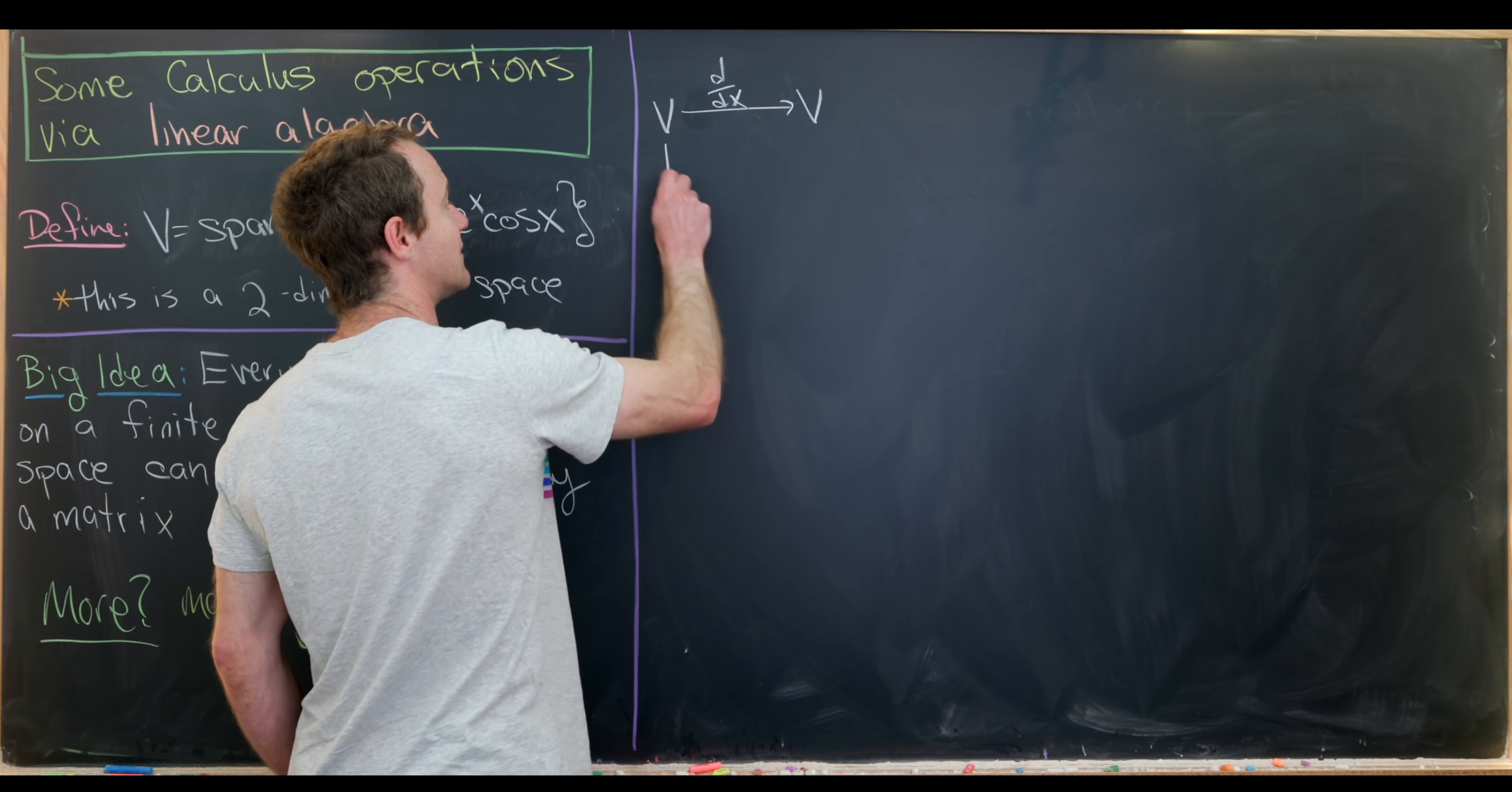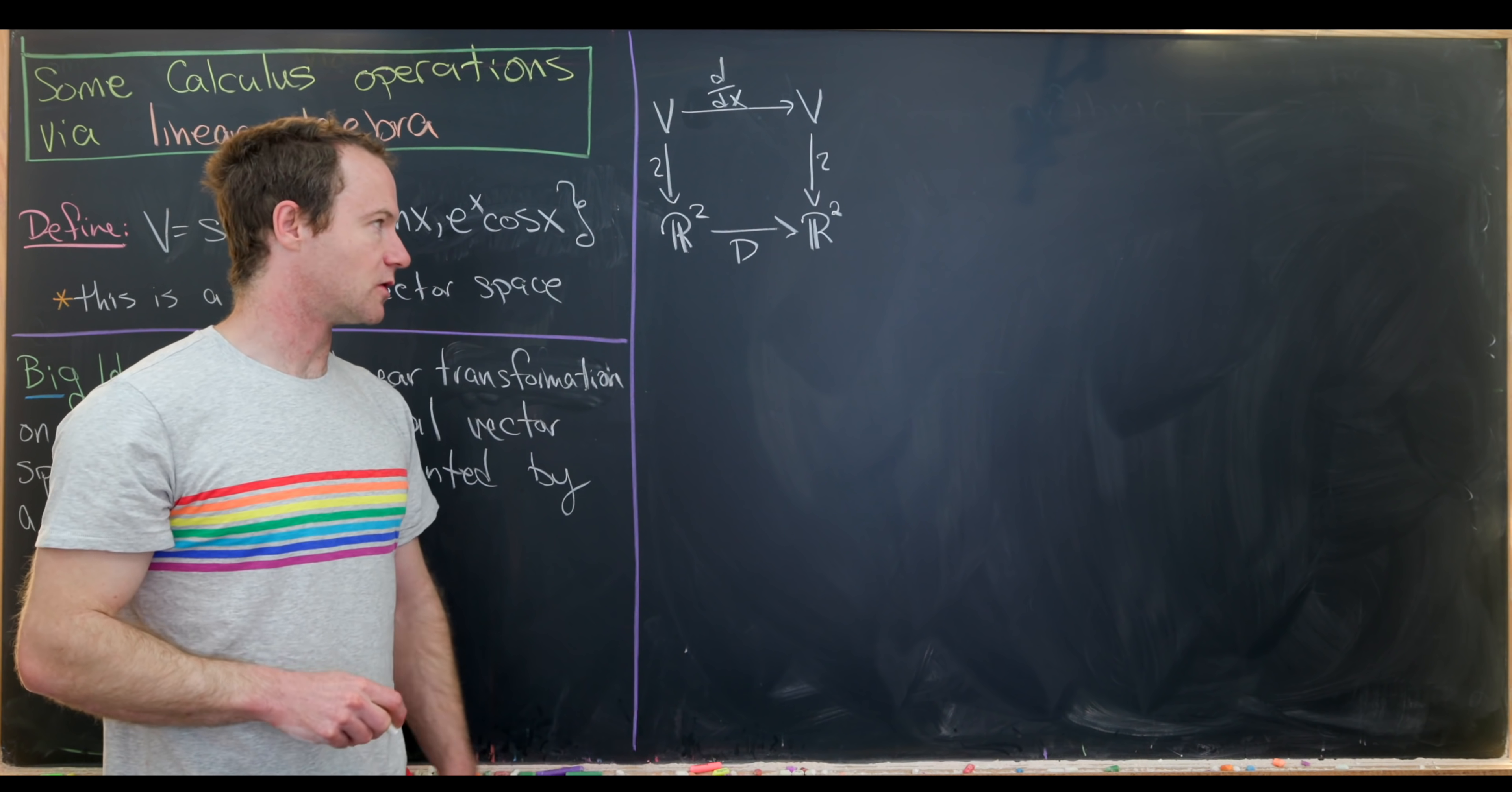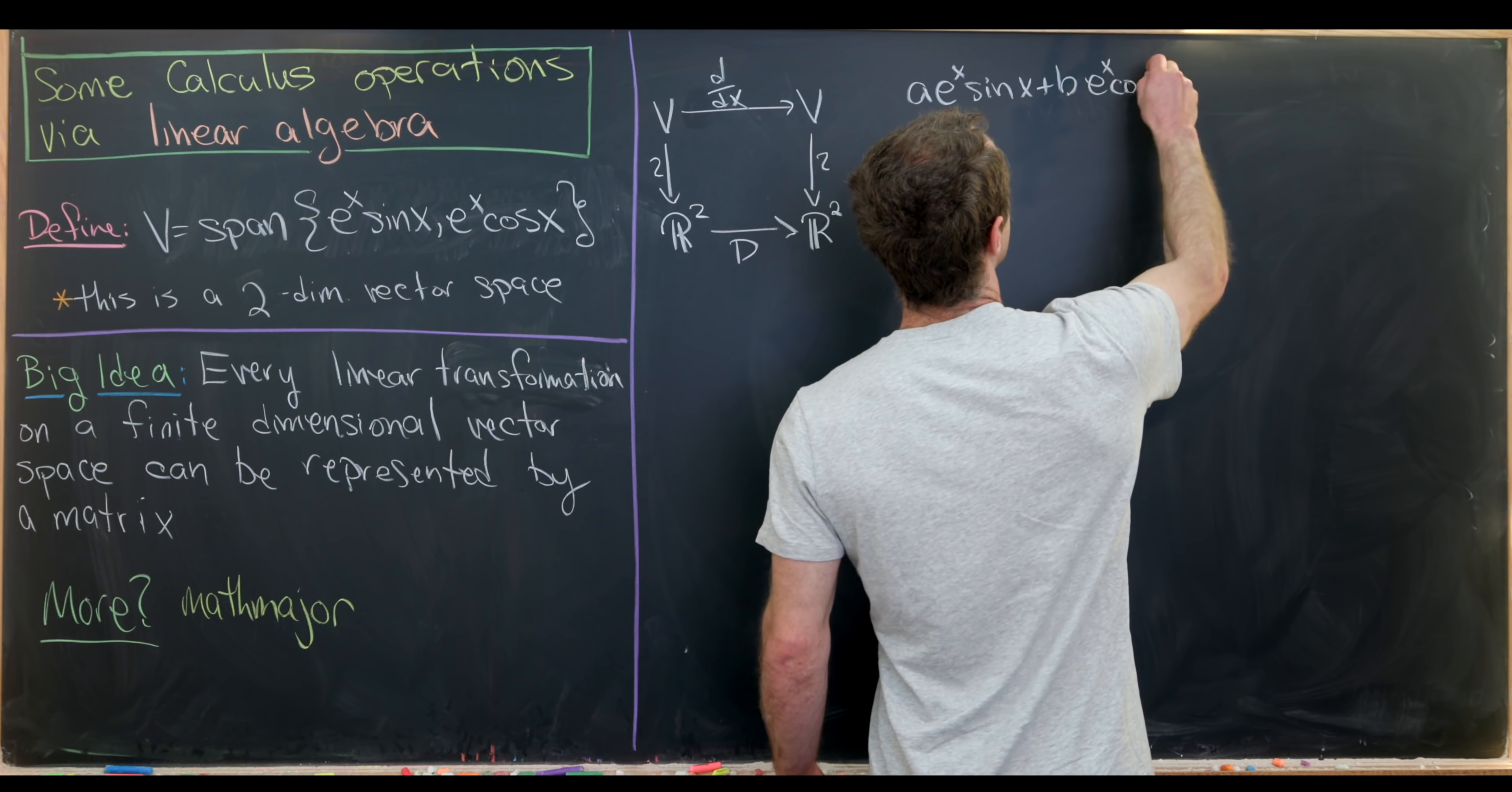Let's take v and map to v via the derivative. And then v should be able to be matched with R2 now. And so now it's R2 because it's a two-dimensional vector space. And furthermore, this v should also be able to be mapped with R2. And then we should hopefully be able to complete this with another matrix, which I'll keep calling D because it's related to the derivative. So now our goal is to find what this matrix is. Let's do that just looking at what our derivative does to an arbitrary element from v.